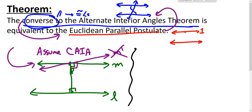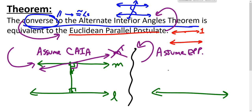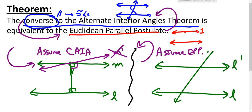Now going the other way: we assume Euclid's parallel postulate and try to prove the converse of the alternate interior angles theorem. The converse requires that there be two parallel lines L and L prime cut by some transversal T, and we want to show that the alternate interior angles must be congruent.